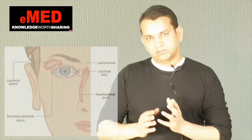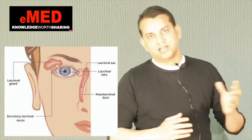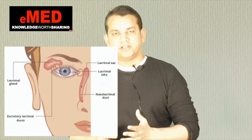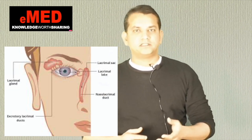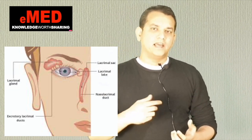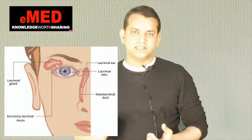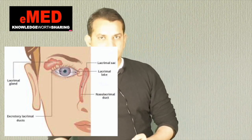Let's begin with dacryocystitis. The lacrimal apparatus consists of the lacrimal gland, which produces the tears, coming to the punctum, drained by the canaliculi and the lacrimal sac, and then through the nasolacrimal duct into the inferior meatus of the nose. Dacryocystitis is an inflammation of the lacrimal sac.